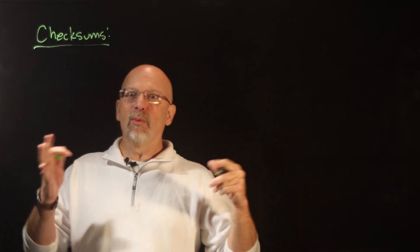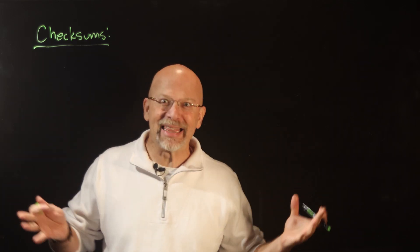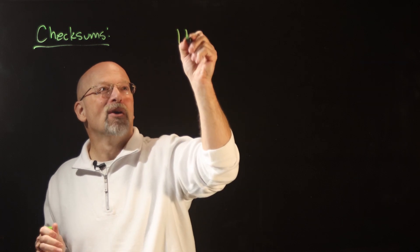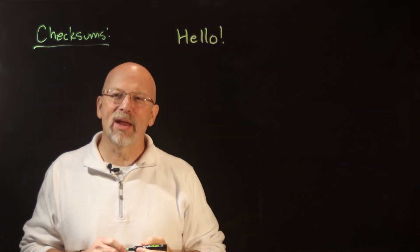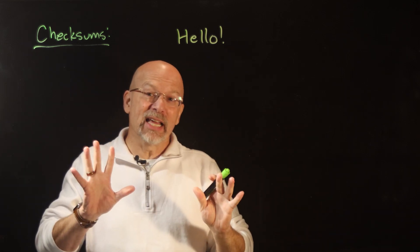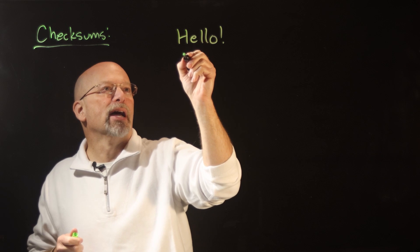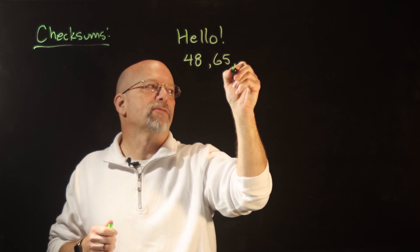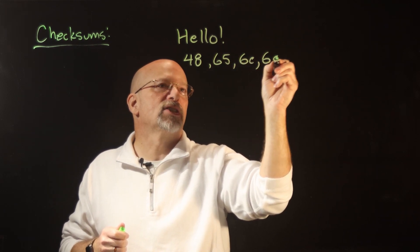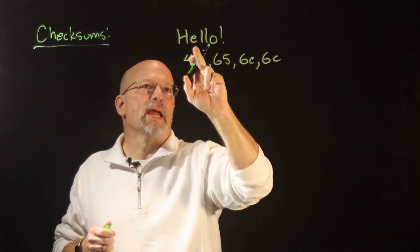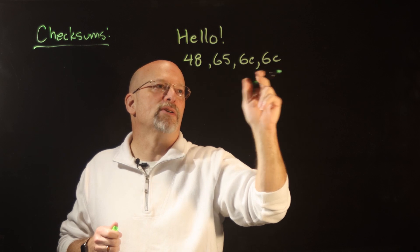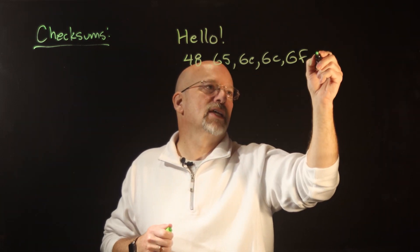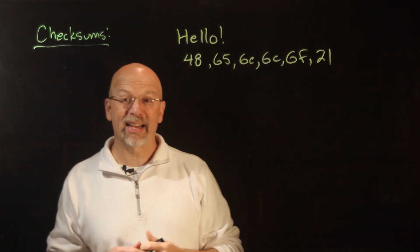Let's go ahead and send some data. What do we always try to do when writing a new program? We write that hello world thing. I'm not going to do all of the bits, but let's say we're trying to send 'Hello!'. In hexadecimal, that's 48, 65, 6C, 6C, 6F, 21 — capital H is 48, lowercase e is 65, the two L's are 6C, O is 6F, and the exclamation point is 21.